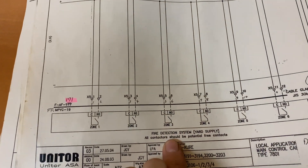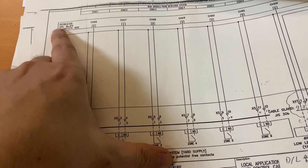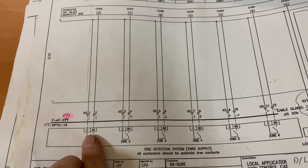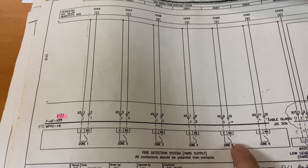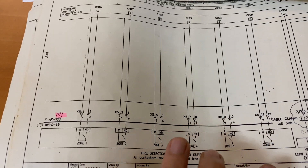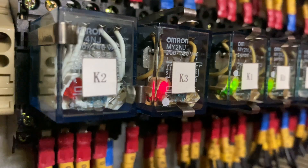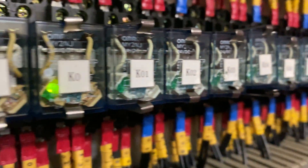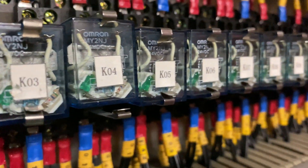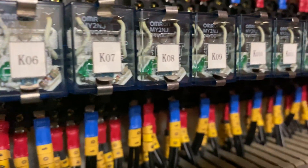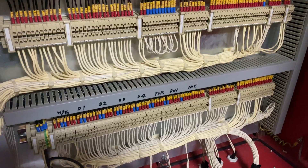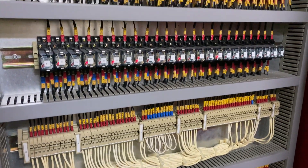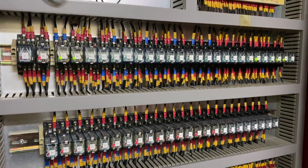I was thinking that the communication between the fire detection system and the PCD2 is not correct. So all I need to do is swap all these wires depending on which is the correct zone.